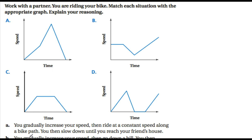Situation A: you gradually increase your speed, then ride at a constant speed along a bike path, then slow down until you reach your friend's house. Of graphs A, B, C, or D, which one matches? It's C. You gradually increase your speed — that's the first part. Then you're at constant speed — that's the flat section. Then you slow down to your friend's house.